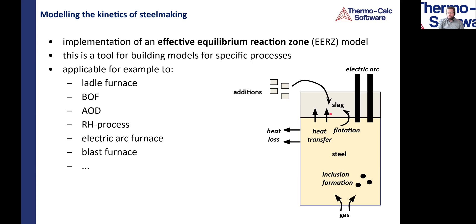Beyond the basic reaction zones, we also need the ability to have additions at any time, heating and heat loss, heat transfer through the reaction zone, flotation of steel to slag zone or transfer of material in the other direction, and consideration of inclusion formation. All of this is available in the Process Metallurgy module. For details about this model, I suggest looking into the literature — there is a lot of literature from different research groups covering all the details.